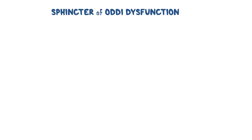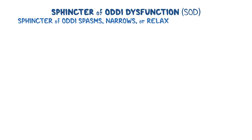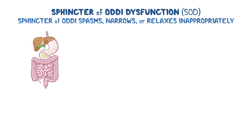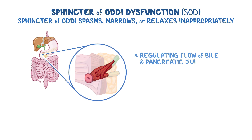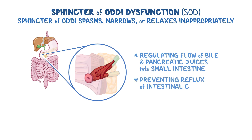Sphincter of Oddi dysfunction, or SOD for short, is a group of rare conditions that occur when the sphincter of Oddi spasms, narrows, or relaxes inappropriately. The sphincter of Oddi is a muscular valve located between the biliary tree and small intestine. It's responsible for regulating the flow of bile and pancreatic juices into the small intestine and preventing reflux of intestinal content into the biliary tree.